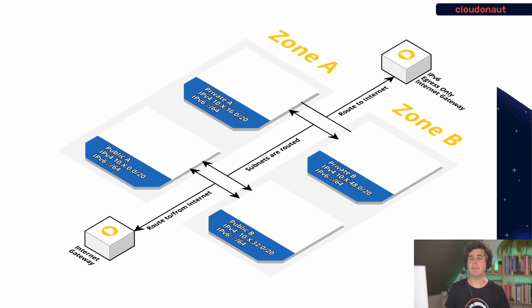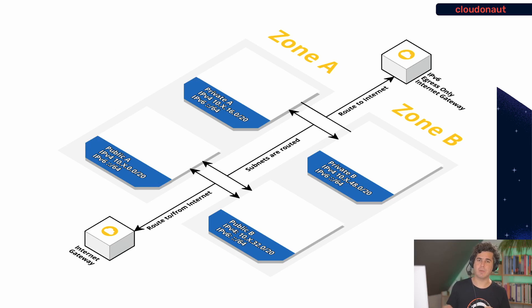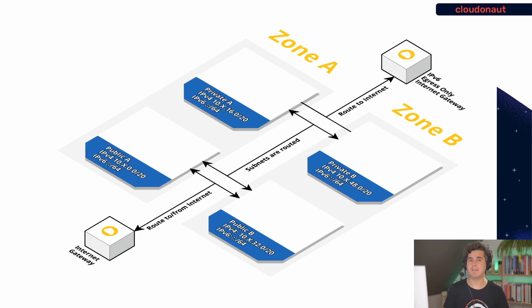I will show you this setup in the UI in a minute. What I'm going to do is deploy four EC2 instances in those subnets: two instances in public subnet A, one in public subnet B, and one in the private subnet — to show you how you can communicate between them and what the egress-only gateway actually does.